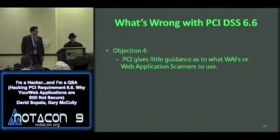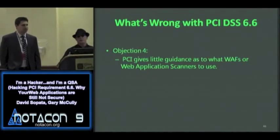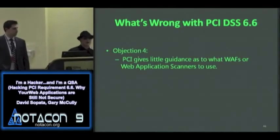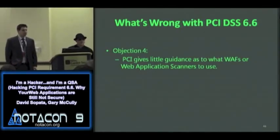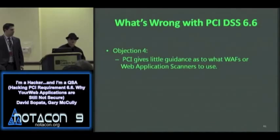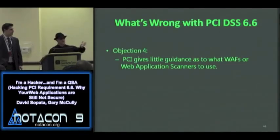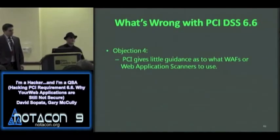We're also an ASV — an approved scanning vendor. What happens as an ASV is the PCI Council sets up a test environment once a year, you scan it, and if you find the right vulnerabilities and provide correct reporting, you're approved. But there is nothing equivalent in place for web application firewalls or scanners to be certified as an approved web application scanner or WAF for PCI DSS 6.6. So I could download a free web application firewall, throw it in front of my web application, and that's acceptable — just like Barracuda, ProFence, or any other WAF. There's no certification process in place for these products.